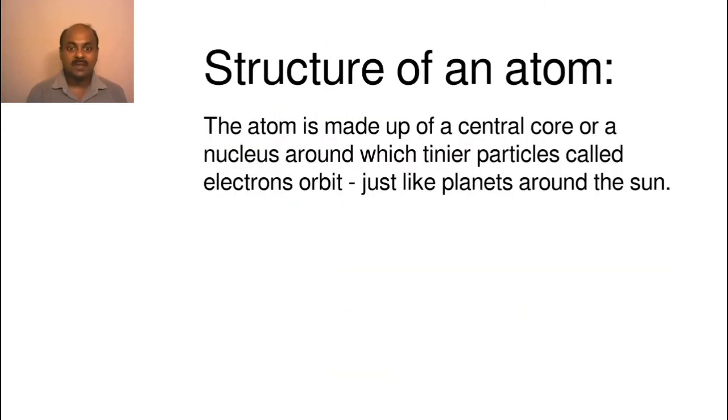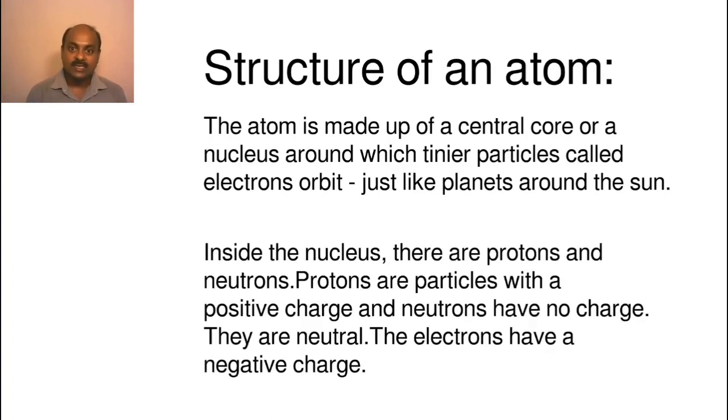To sum it up, the atom is made up of a central core or a nucleus, around which tinier particles called electrons orbit, just as the planets orbit the sun. Inside the nucleus, there are protons and neutrons.